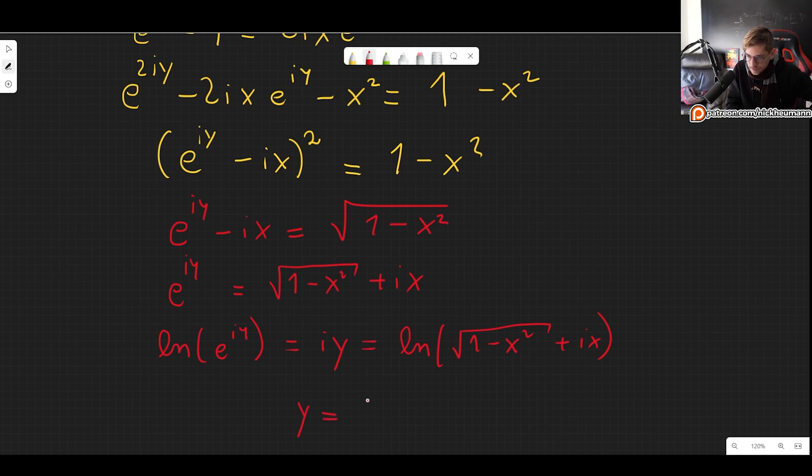And now we can isolate y. So y is here. We can divide by i. So we get 1 over i times the same natural log. So nothing has changed.